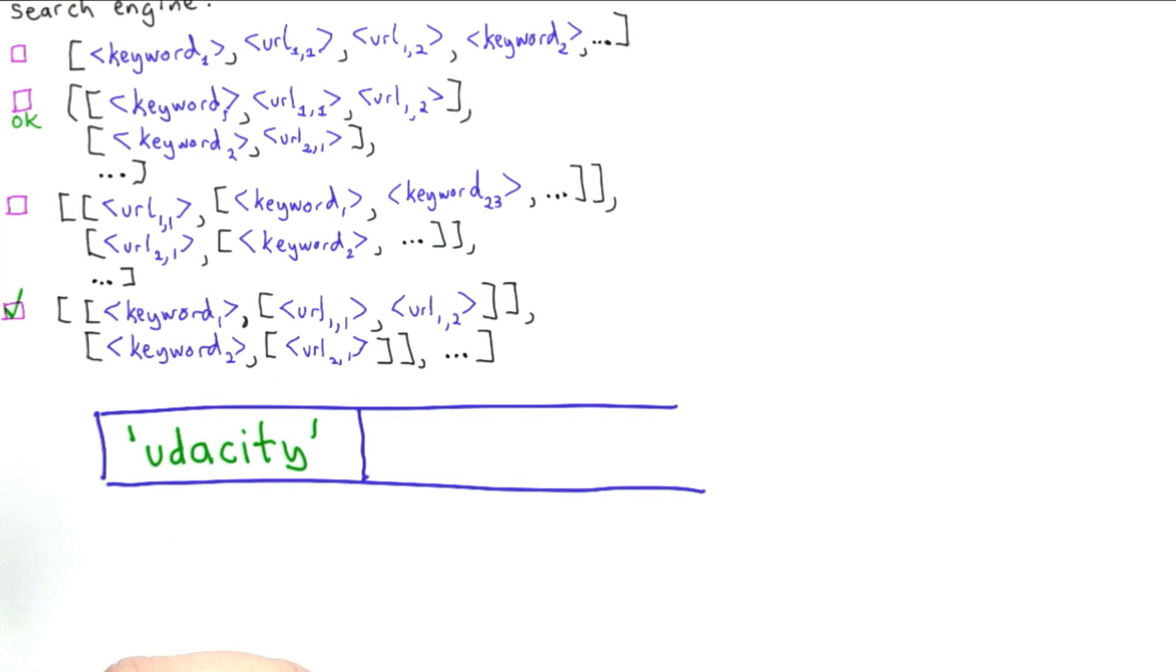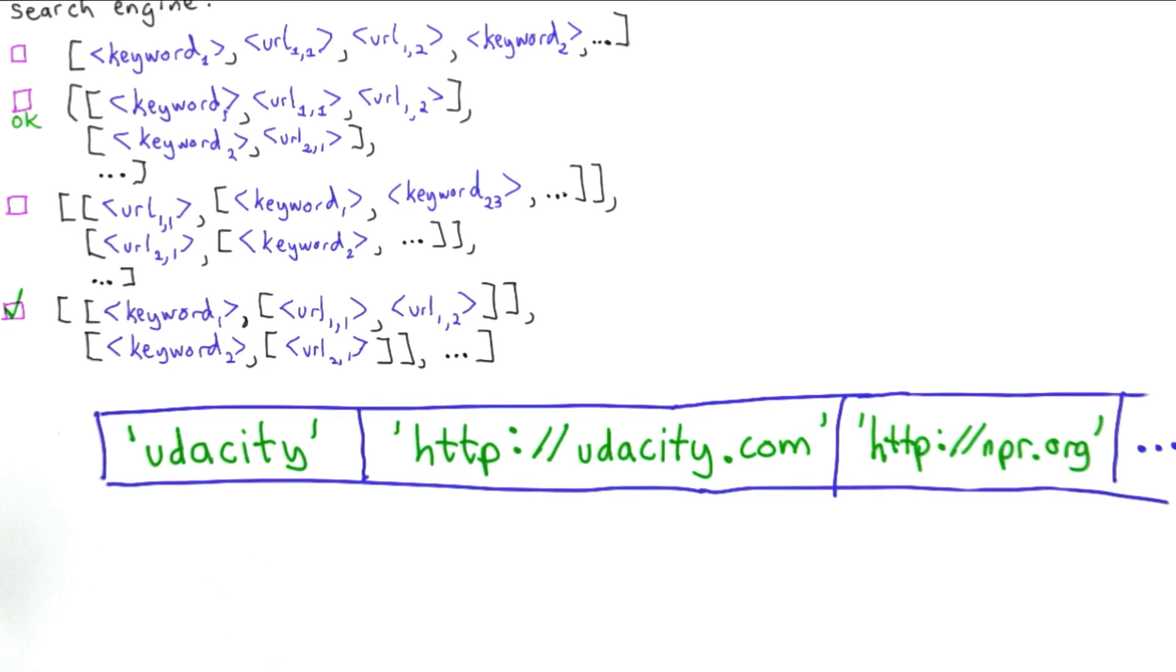Each keyword is a string, and the keyword is followed by the URLs where that keyword appears. So for option 1, we have a list, and it's a single list containing strings. Each string is either a keyword or a URL. And we have the keyword followed by the URLs where that keyword appears.